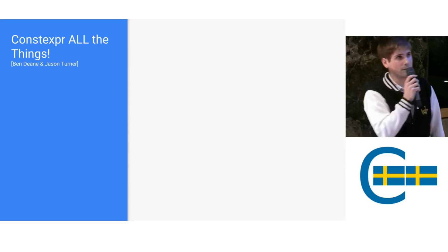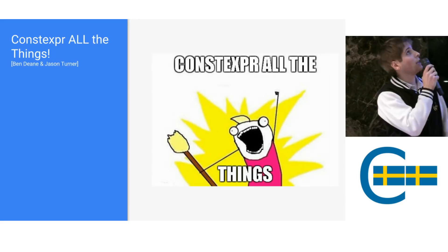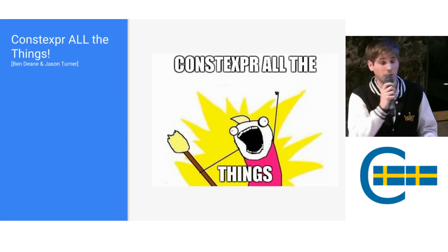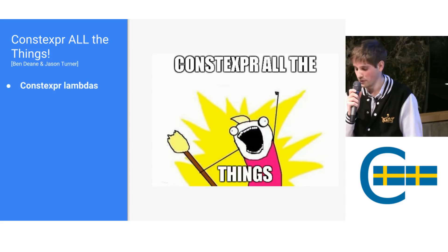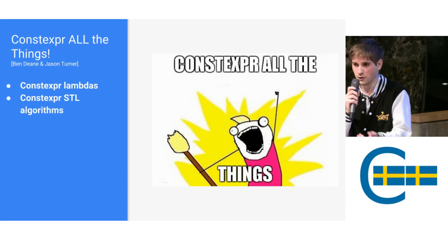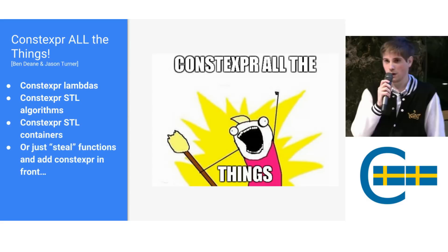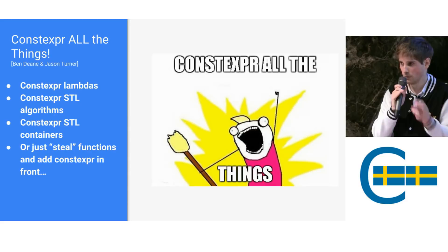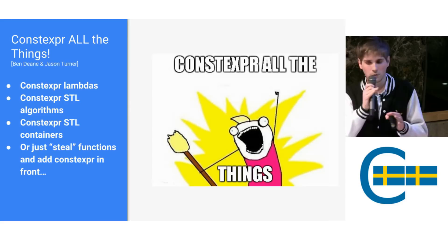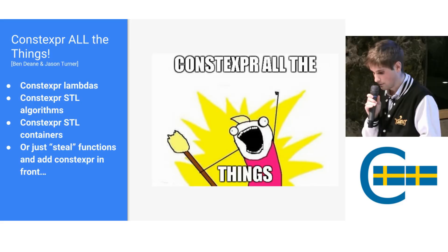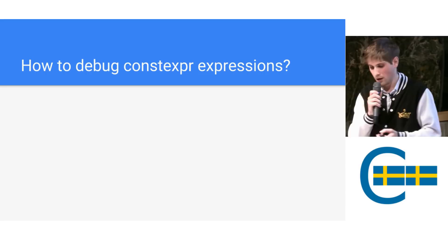But if is not the only thing you can constexpr — you can constexpr all the things. At least that's what Ben Dean and Jason Turner say. Go check their YouTube video; they explain a lot about what you can do with constexpr. You can parse some JSON, for instance. Some standard library algorithms can be made constexpr, like Bjorn did. Some containers are constexpr for free, and even if they are not, most of the time you can just steal the implementation and write constexpr in front of it. Just copy something open source and copyable. You just have constexpr and things become constexpr by magic — 99% of the time.